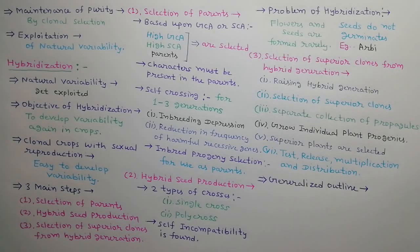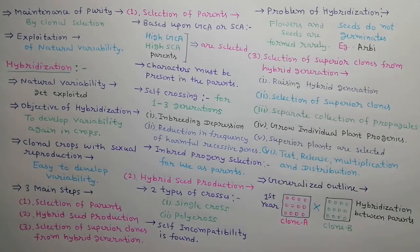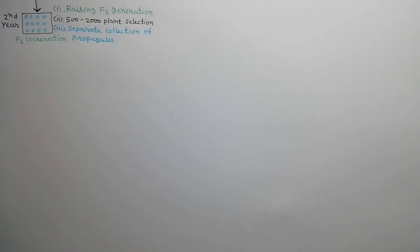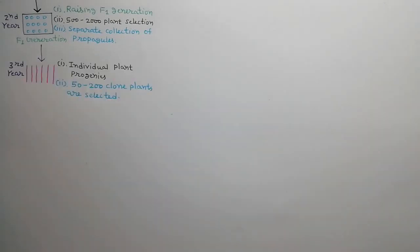We can elaborate this method by a generalized outline. In the first year, selected clone plants are hybridized, and as a result, hybrid seeds are produced. In the second year, F1 population is raised by growing hybrid seeds, and 500 to 2000 superior plants are selected. Propagules are collected separately from these selected plants. In the third year, individual plant progenies are developed, and 50 to 200 superior clone plants are selected.